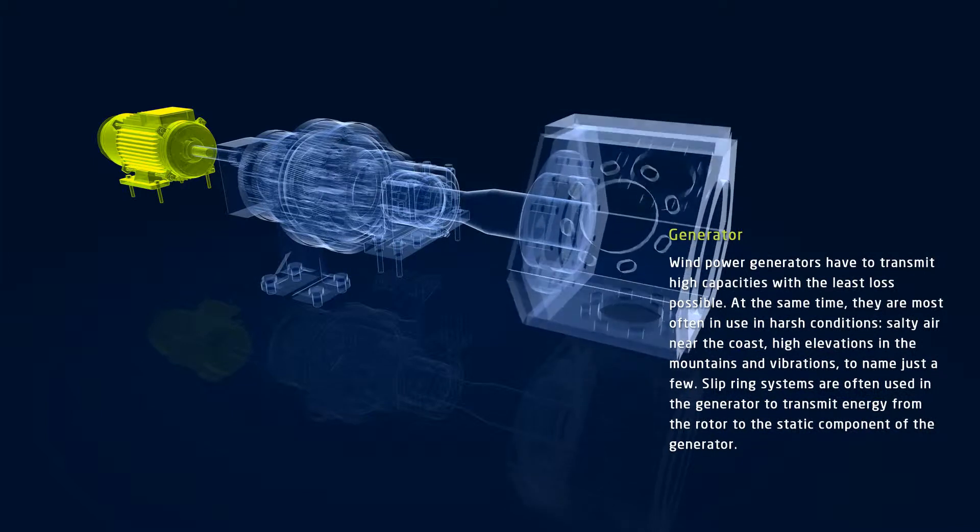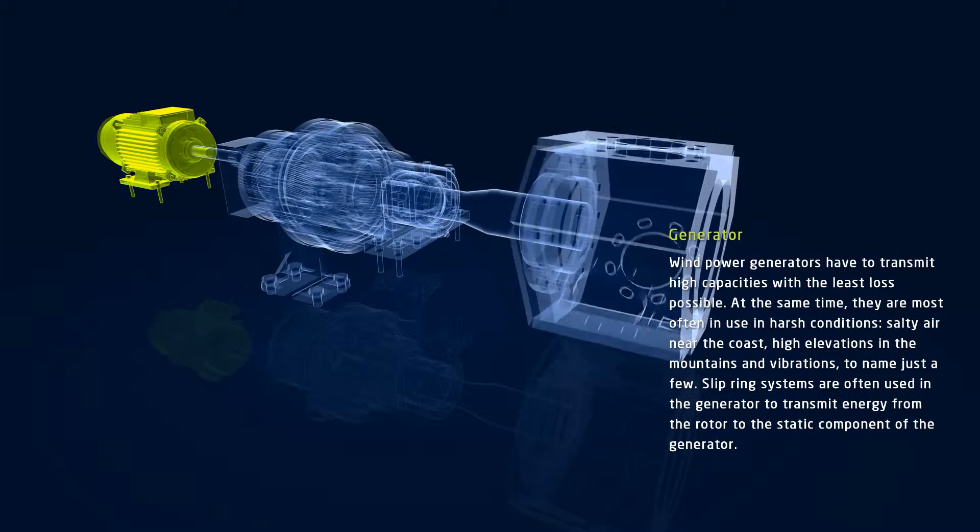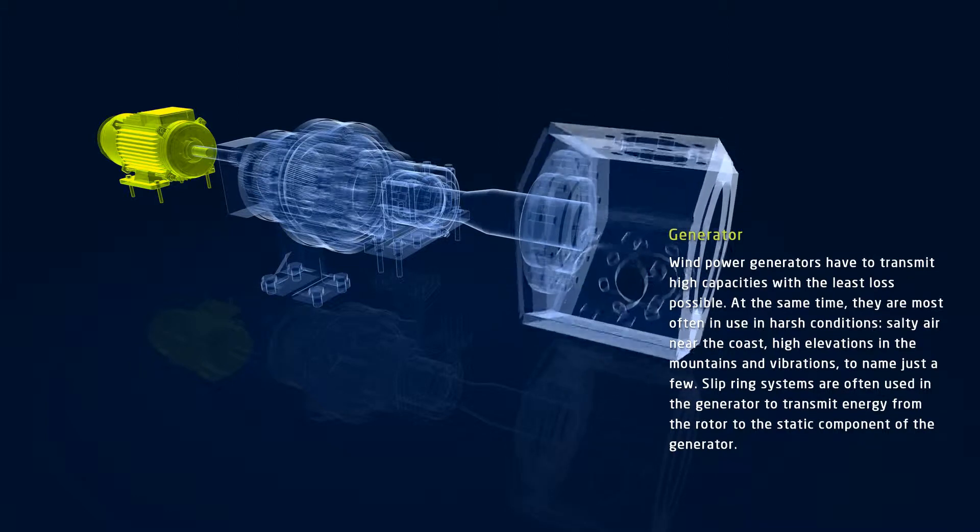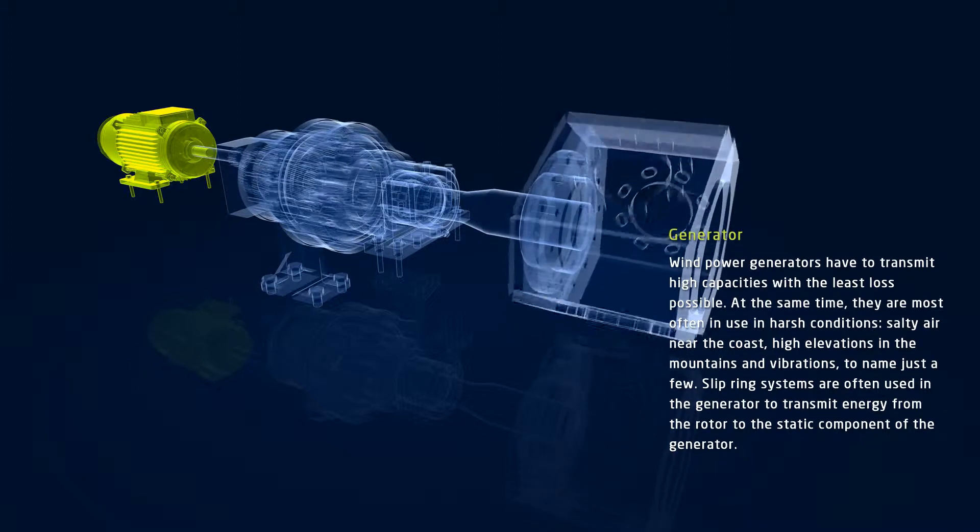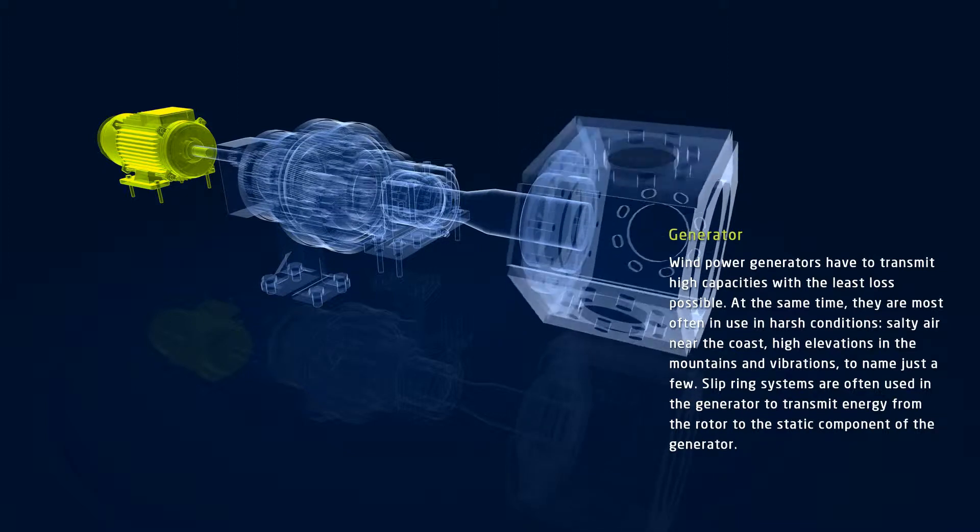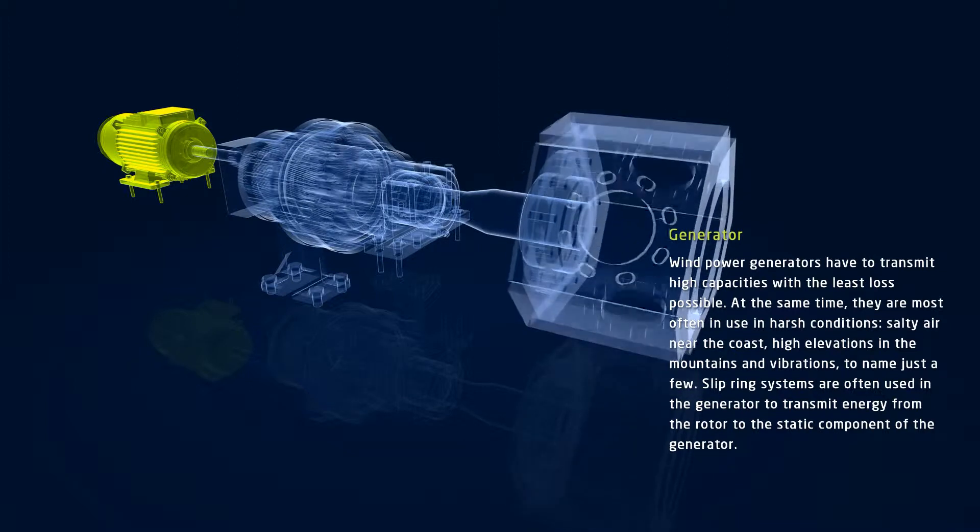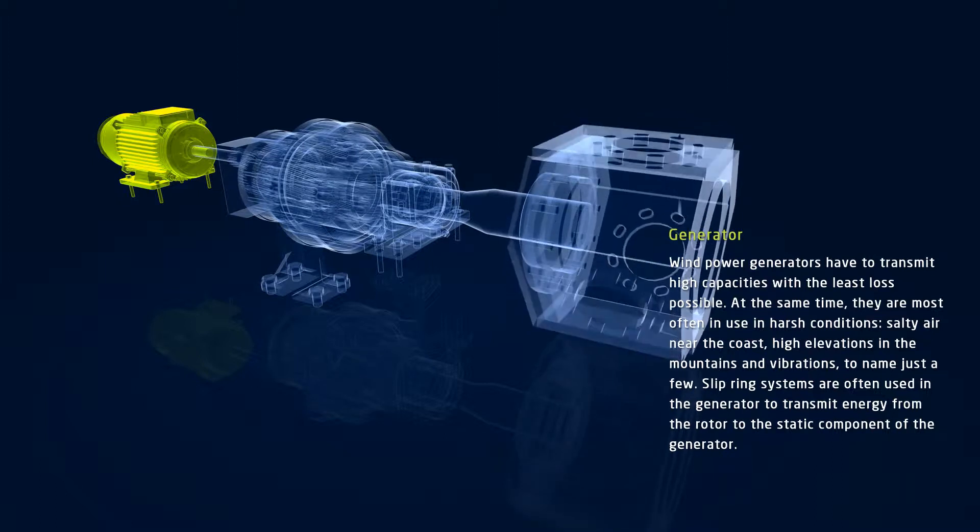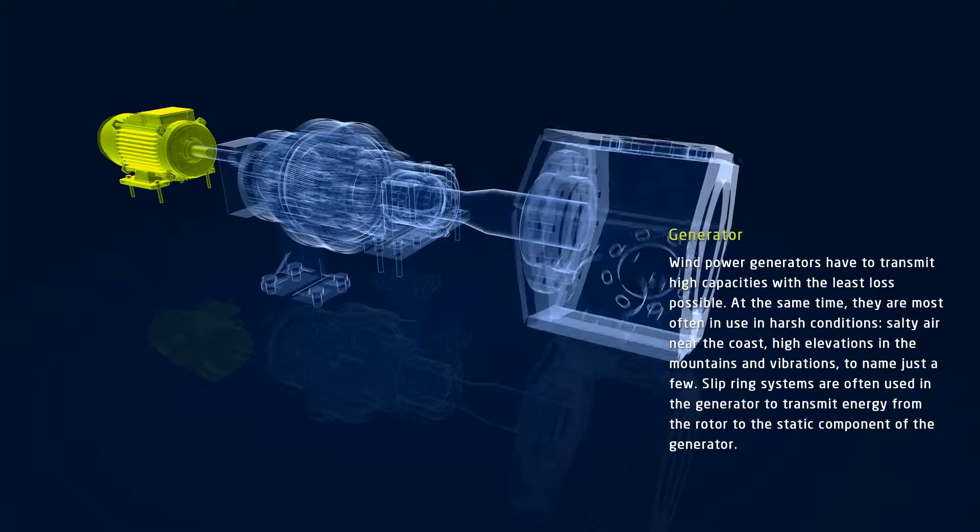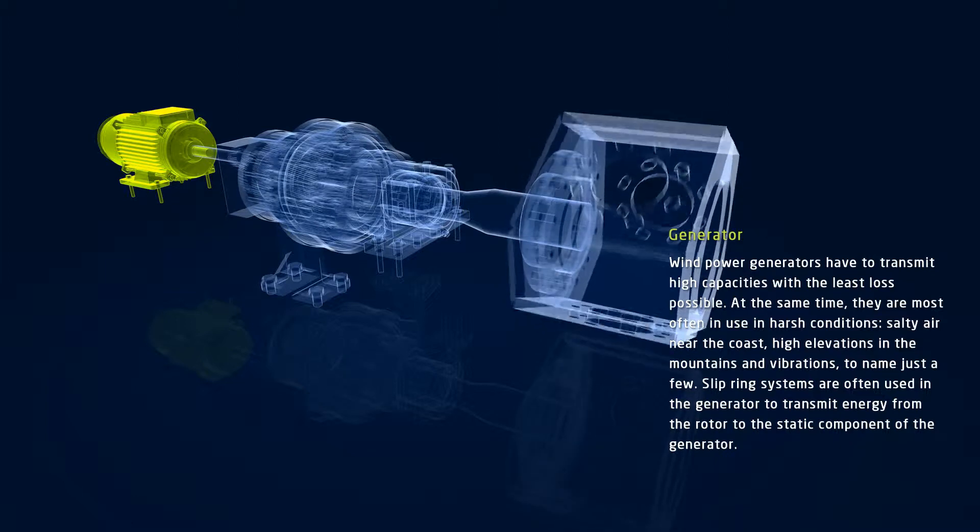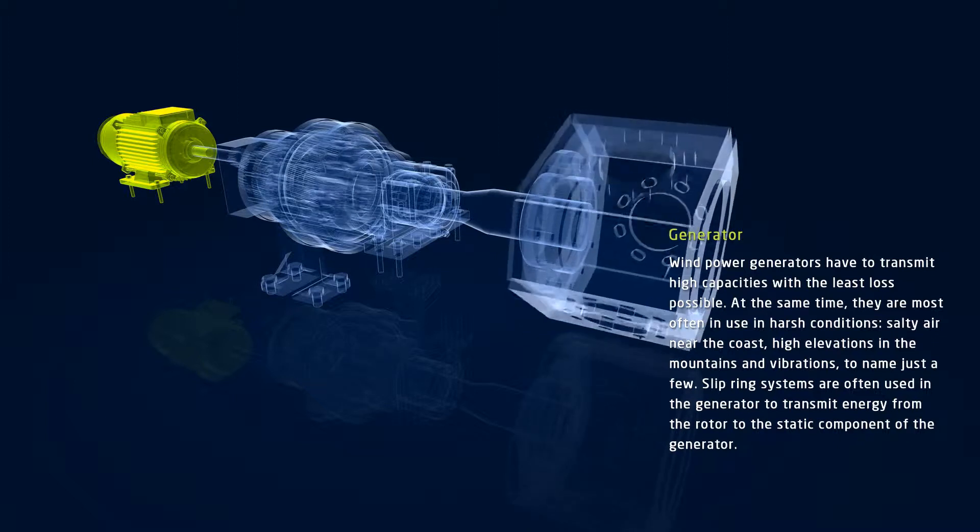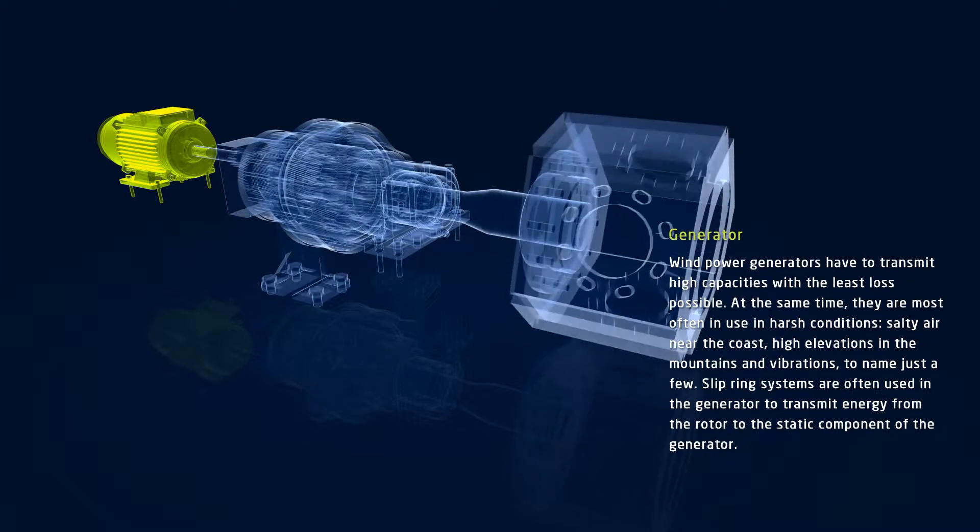Today, wind power stations can already generate up to 7.5 megawatts of power. That means that a great deal of energy is transformed in generators. The objective here is to transform the energy with as little loss as possible. The demanding application conditions for wind power stations make this even more difficult. High elevations, salt from the nearby ocean air, and continuous vibrations. This means that generators are subject to the most demanding conditions.